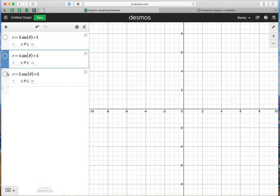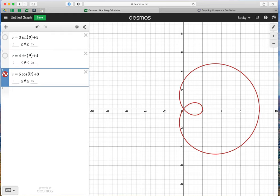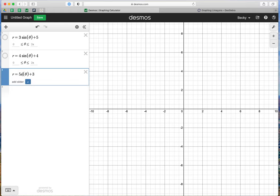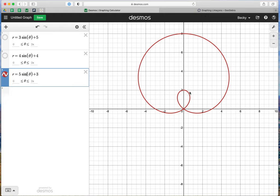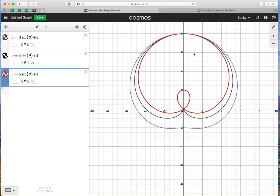Let's do the last one. We have 5 cosine theta plus 3. This is the Limasson with the inner loop, or loop Limasson, and now let's do 5 sine theta plus 3, and now it's rotated so that it is vertical, with the line of symmetry for each of these at theta equals pi over 2, instead of theta equals 0 when it was cosine.